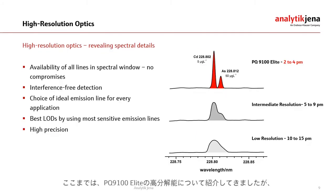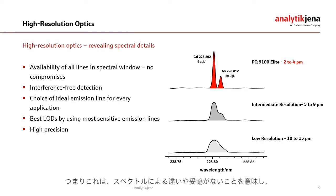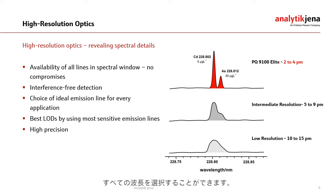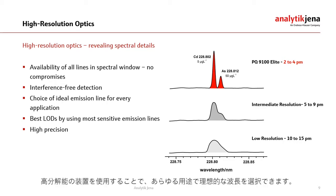Since I have introduced the PlasmaQuant 9100 Elite as a high resolution ICP-OES, we cannot close this webinar without talking about the main feature of the instrument. But how does high resolution improve your specific analysis? First of all, our instruments provide complete spectral coverage from 160 to 900 nanometers — no spectral gaps, no compromises. This allows for the selection of every analytical line for each element. And when your favorite emission line is interfered, this is where high resolution comes into play, making it possible to choose the ideal emission line for every application.